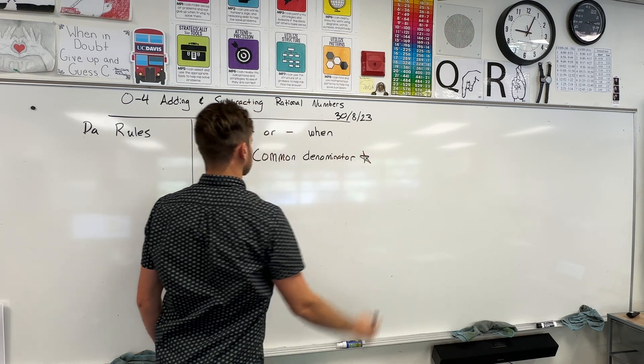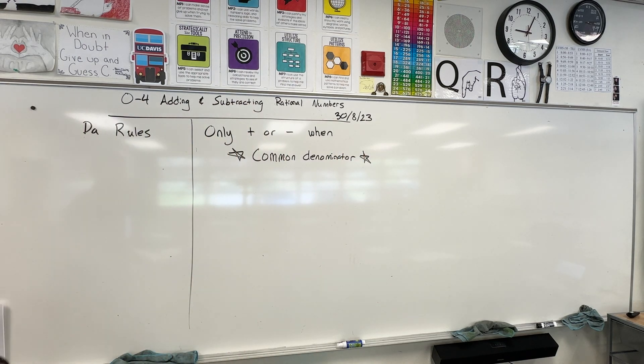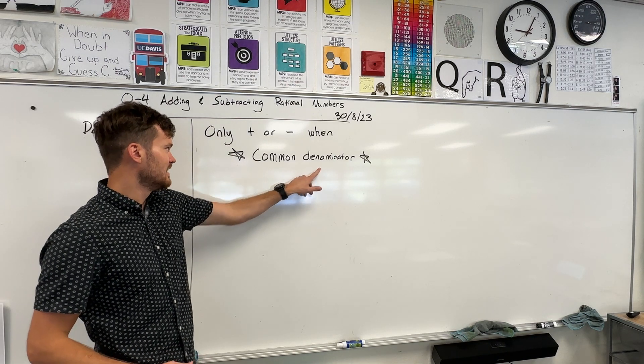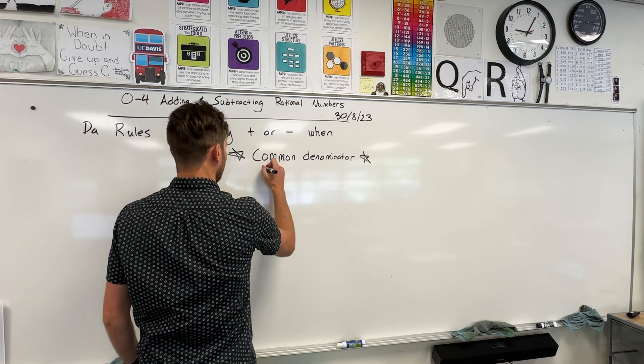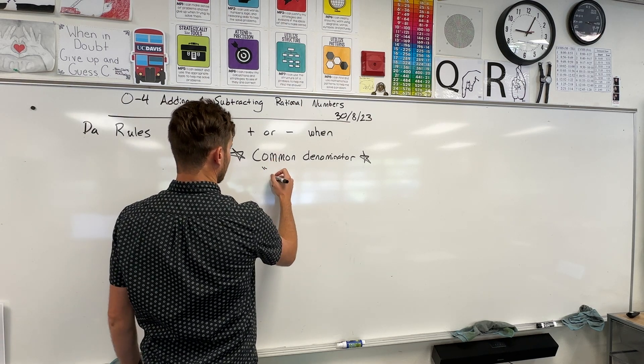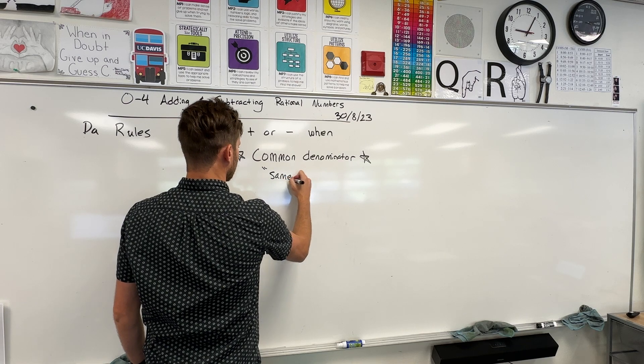All right, so let's give a few examples. By the way, whenever you multiply and divide, it doesn't matter if you have the same denominator. Again, if you don't like 'common denominator,' I can write in quotes a different word down here: this is the same thing as the 'same bottom.'